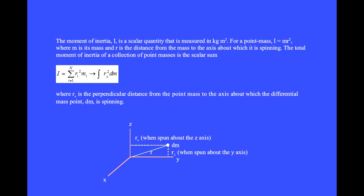The moment of inertia, I, is a scalar quantity that is measured in kilogram meter squared. For a point mass, I equals mr squared, where m is the mass and r is the distance from the mass to the axis about which it is spinning. When this mass is spun about the z axis, this is the perpendicular distance between the mass and the axis.